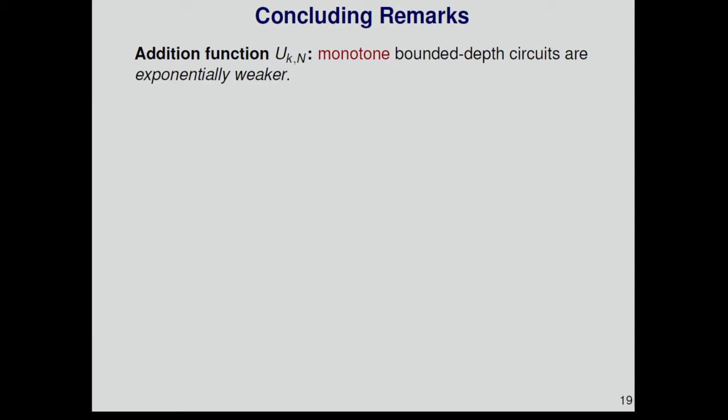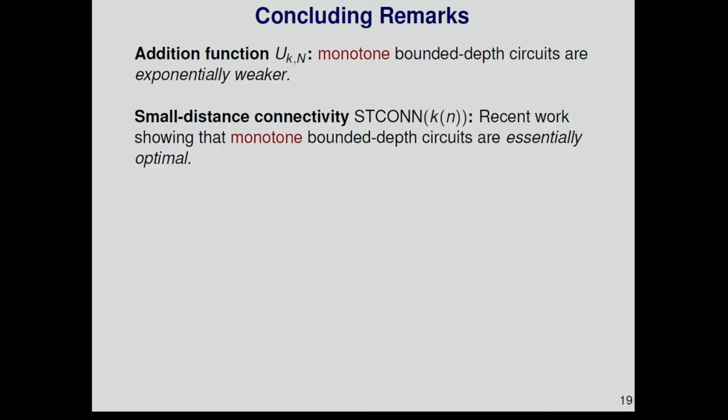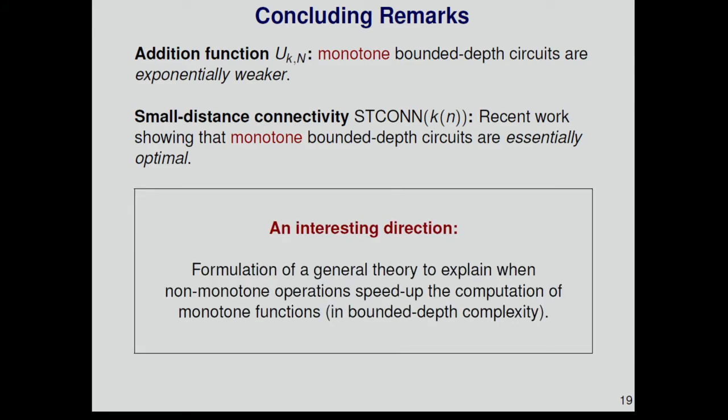Let me conclude. What we have shown is that the addition function is a monotone function, but monotone bounded depth circuits for this function are exponentially weaker than general circuits. It's a very natural function for which this happens. On the other hand, there are other monotone functions that are very natural, such as the ST connectivity problem with bounded distance. We know now that for this function, a monotone bounded depth circuit is essentially optimal. This is the result I mentioned two days ago. So there are natural functions, and for some, negations speed up computation, and for some, they don't. I think a very interesting direction will be to try to formulate a more general theory to explain when such non-monotone operations can speed up the computation of monotone functions. Thank you.